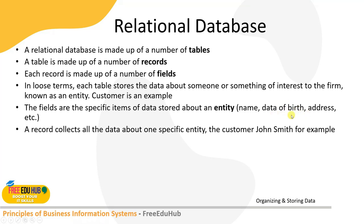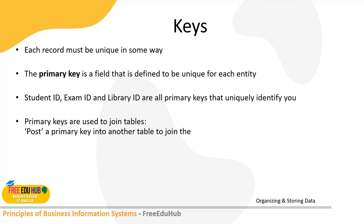For example, in a customer entity the fields might include name, date of birth, and address. The record collects all the data about one specific entity — for example, John Smith and all information related to that customer would be available in one record. That's why we have different tables in a database, so we can maintain each entity and their details in separate tables.